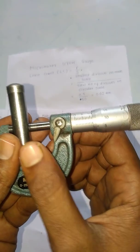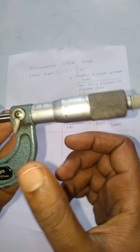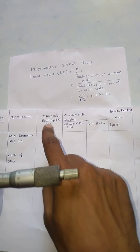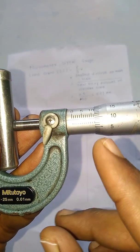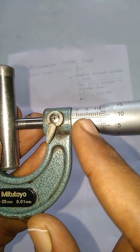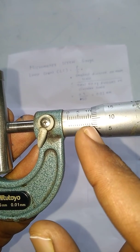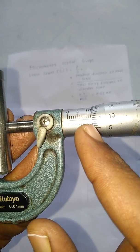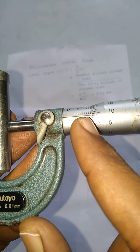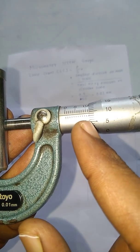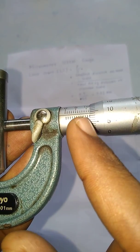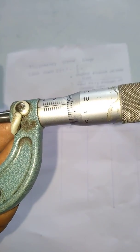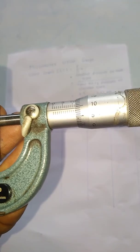To find out the outer diameter of this pin, first of all, what is the main scale reading — that is A. Let us find out the main scale reading: 10, 11, 11.5. The main scale reading passes the 11.5 line, so the main scale reading is equal to 11.5 mm.